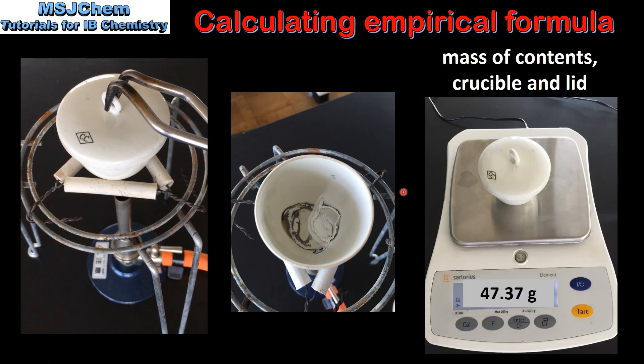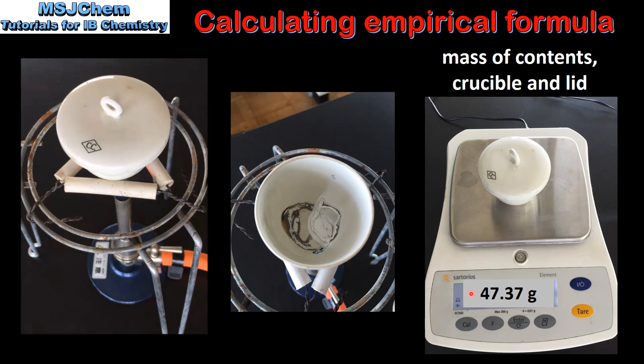When the crucible has cooled, the mass of the contents, crucible, and lid is recorded. As you can see, the mass has increased as the magnesium has reacted with the oxygen in the air.